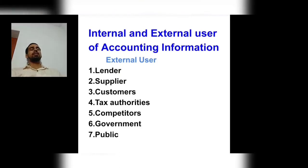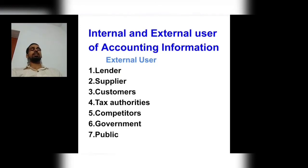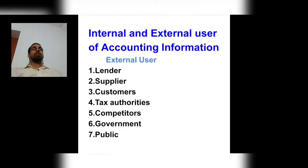The second external user is the supplier. If we purchase anything from a supplier, it is not necessary to pay all cash immediately — we may buy on credit. So suppliers also go through accounting information to check whether they will be paid. They want to know the financial reliability of the organization.